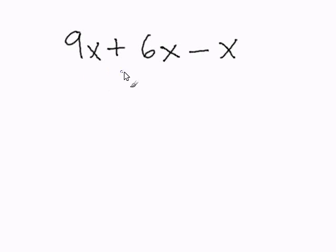In this case, we have 9x plus 6x. So we combine the coefficient, which is the number in front of the variable, and our variable will remain the same. So 9x plus 6x is 15x.